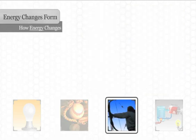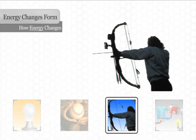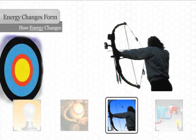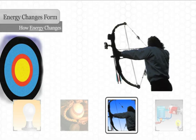Energy changes form when we shoot an arrow from a bow. When an arrow is drawn in a bow, both the arrow and the bowstring have potential energy. When we release the bowstring, the energy changes to kinetic energy as the arrow and string shoot forward.